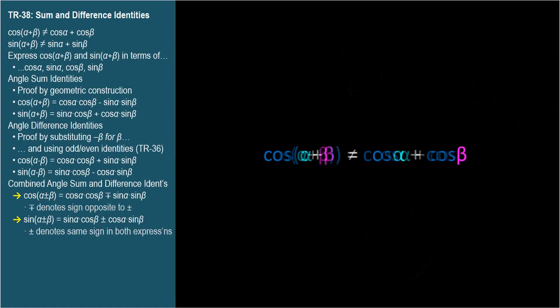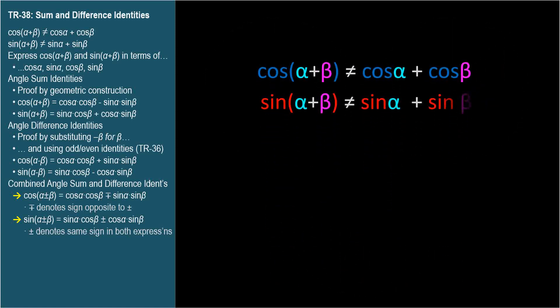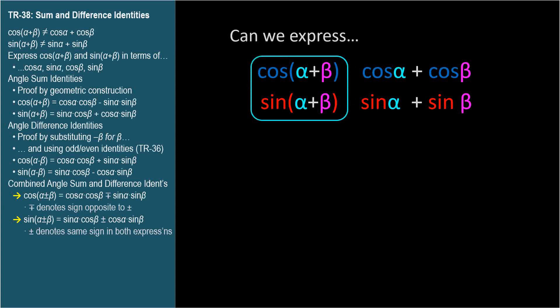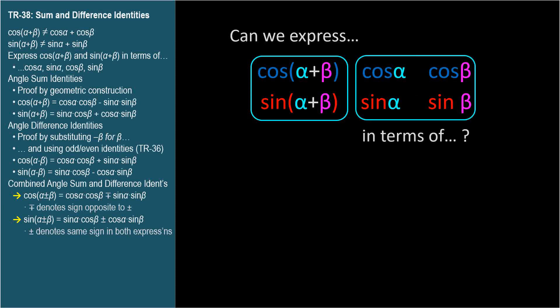Similarly, sine of alpha plus beta is not equal to sine alpha plus sine beta. Can we express the cosine and sine of alpha plus beta in terms of the cosines and sines of alpha and beta? Yes. In this video, I'll show the identities, prove them, and summarize them. In the next video, TR-39, we'll test them and use them.